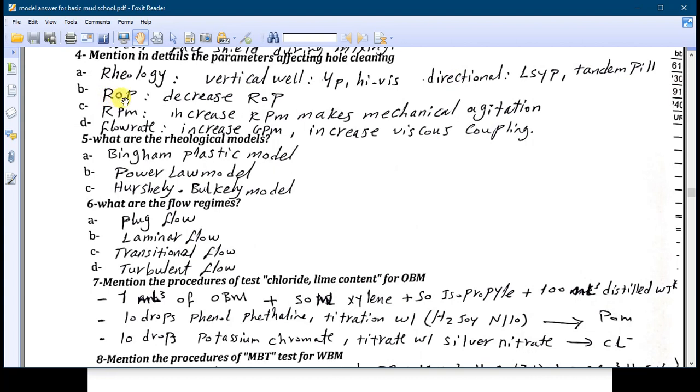Also the ROP: you have to decrease the ROP in order to give chance for the mud to make good hole cleaning. Number C: the RPM. Increasing the RPM makes mechanical agitation and increases also the viscous coupling which leads to make good hole cleaning.